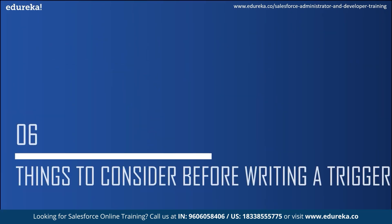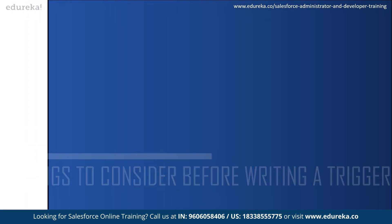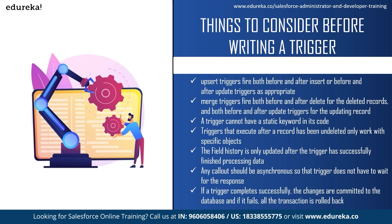Now let us look at things to consider before implementing a Salesforce trigger. First, upsert triggers can fire both before and after insert or before and after update as appropriate. Merge triggers can fire both before and after delete for deleted records, and before and after update for updating records. A trigger cannot have a static keyword in its code. Triggers that execute after a record is undeleted only work for specific objects. Field history is only updated after the trigger has successfully finished processing. Any callout should be asynchronous so the trigger does not wait for a response. Finally, if a trigger completes successfully the changes are committed to the database; if it fails, the entire transaction is rolled back.